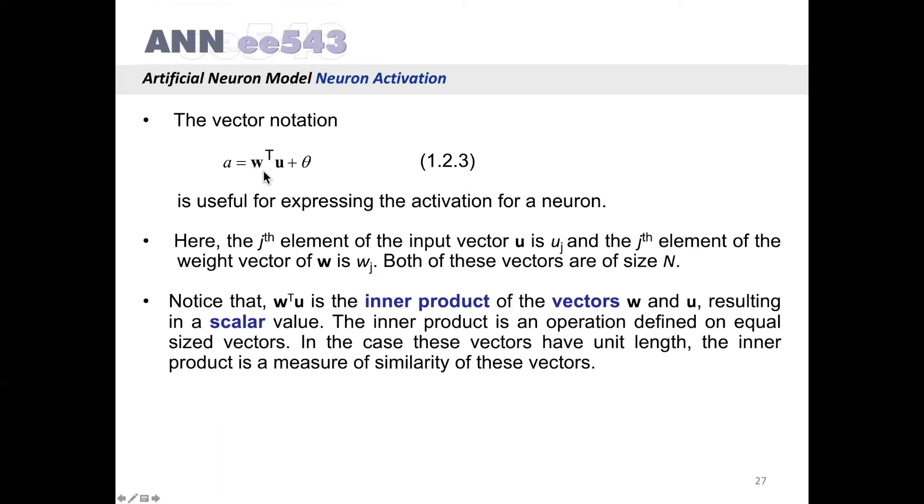However, if we are constructing the vector having also w0 value and u0 value here, having size N plus 1, in that case theta is omitted here. This vector notation is useful for expressing the activation for a neuron. Here the jth element of the input vector u is shown as uj and the jth element of the weight vector w is noted as wj. Both of these vectors are of size N. Notice that wTu is the inner product of two vectors w and u resulting in a scalar value. The inner product is an operation defined on equal size vectors. In the case these vectors have unit length, the inner product is a measure of similarity of these vectors.